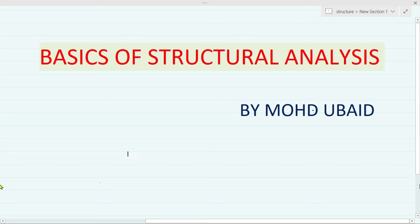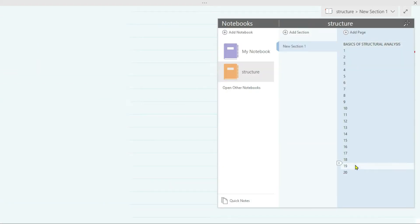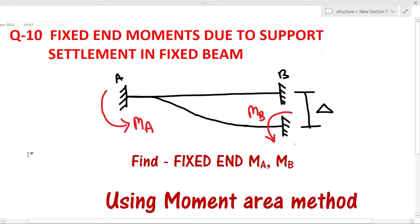Welcome to my YouTube channel. My name is Mohammad and this is another video of the Basics of Structural Analysis series. Today we are going to discuss a very interesting problem in which we have a fixed beam and at support B there is a support settlement delta. We are going to find out the fixed end moment due to this support settlement using the moment area method.